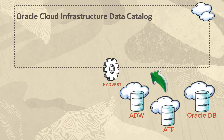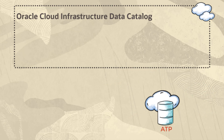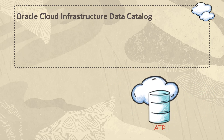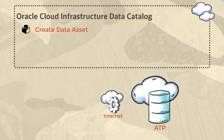Consider an Oracle Cloud Infrastructure data source such as an autonomous transaction processing database that is set up to be directly accessible from the Internet using a public IP address. In order to harvest this autonomous transaction processing data source from your data catalog, you need to register the data source as a data asset, add a connection to the data asset, and then harvest the data asset.